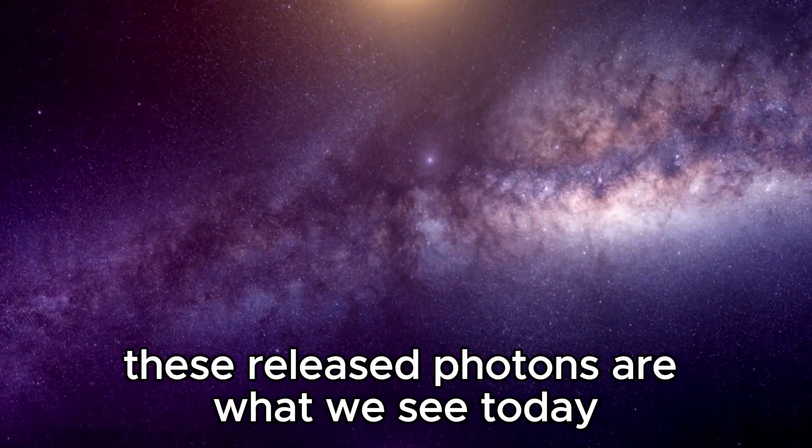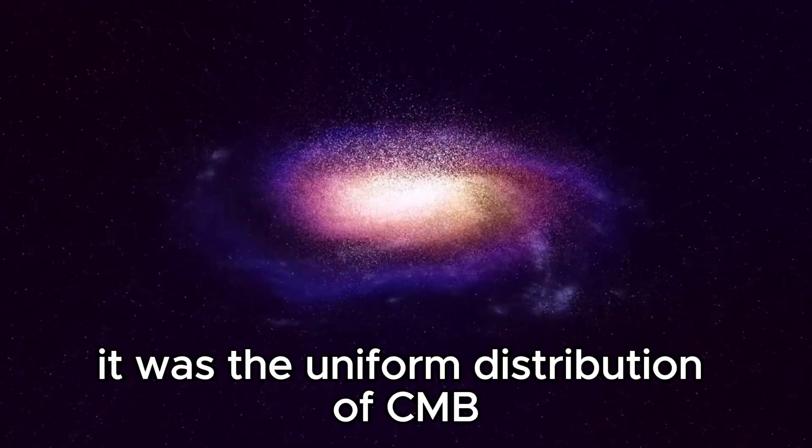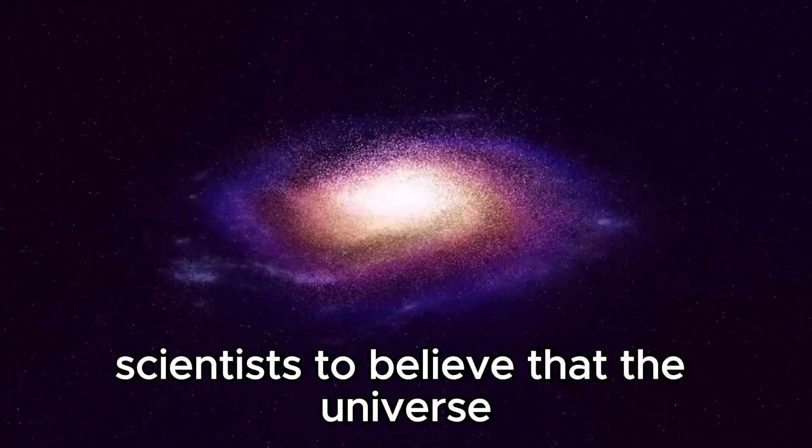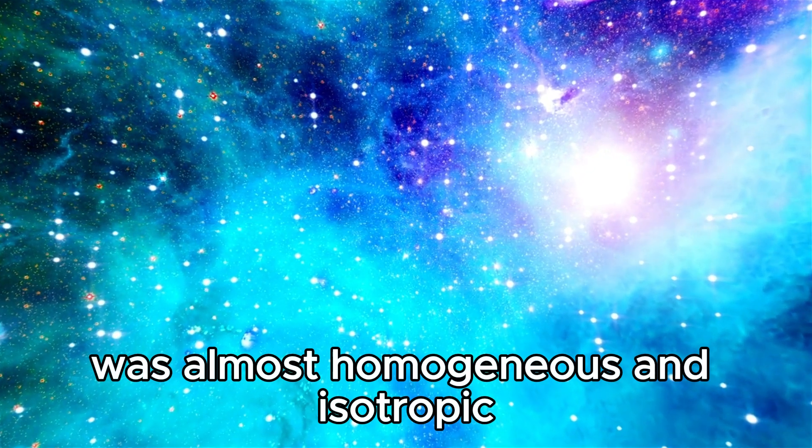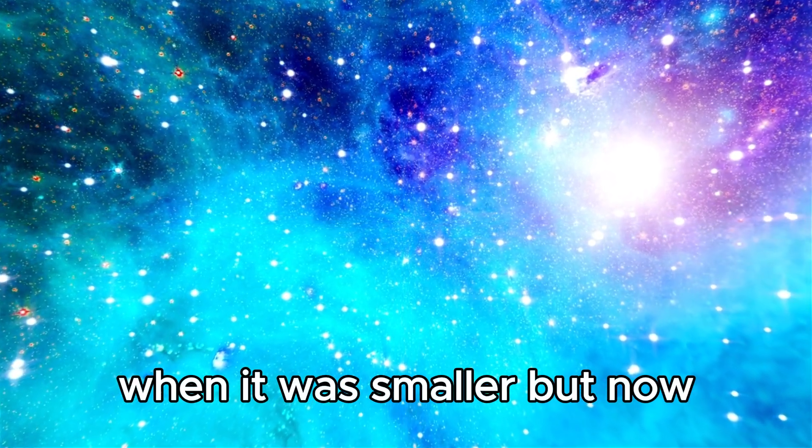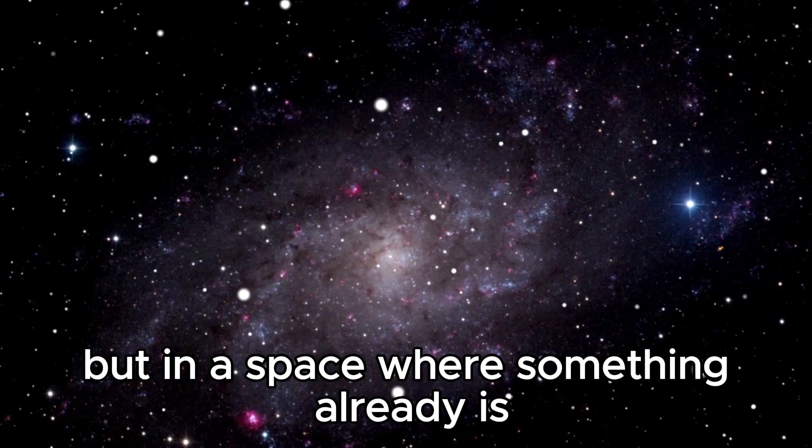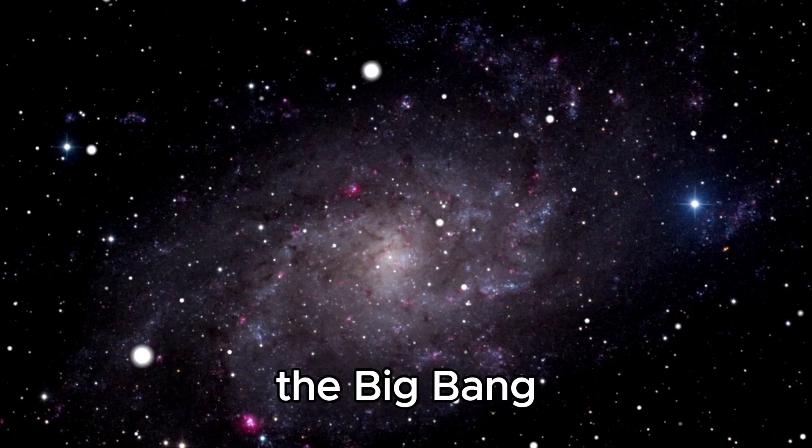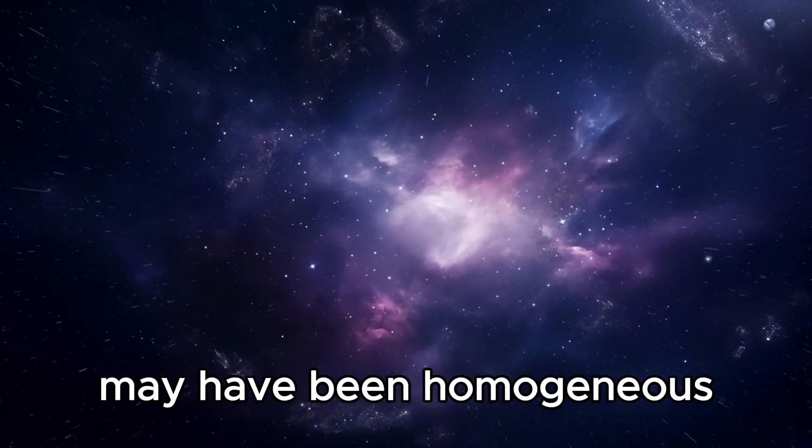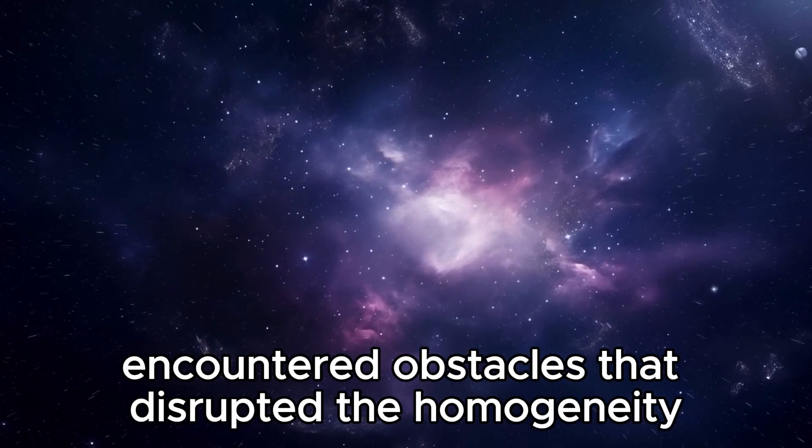These released photons are what we see today as cosmic background radiation. It was the uniform distribution of CMB radiation that led scientists to believe that the universe was almost homogeneous and isotropic more than 13 billion years ago when it was smaller. But now, imagine what if the universe is not expanding in an empty space, but in a space where something already is. The Big Bang and the distribution of matter shortly afterward may have been homogeneous, but then the expanding universe encountered obstacles that disrupted the homogeneity.